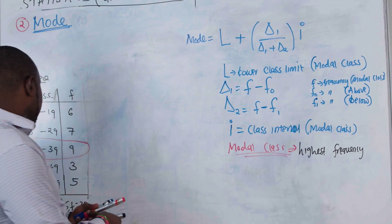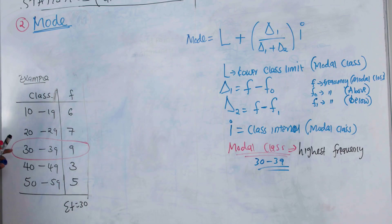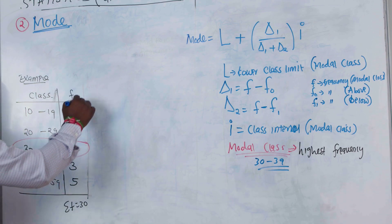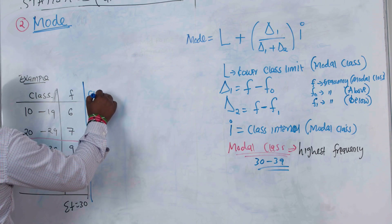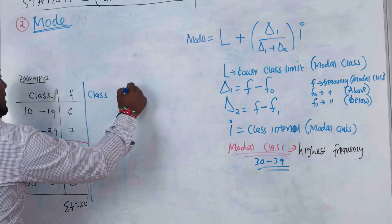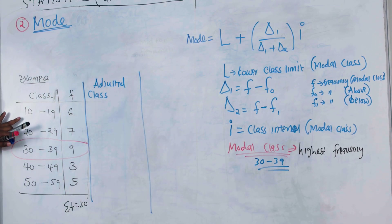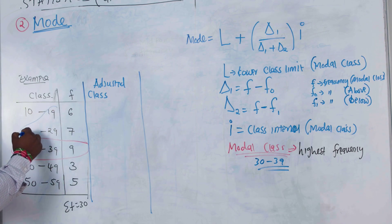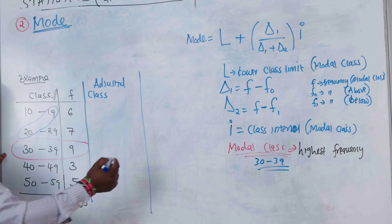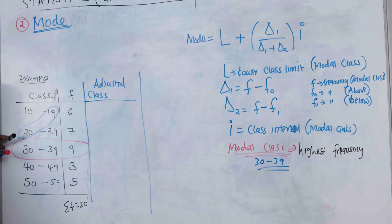Now, for this modal class we need to find the adjusted class limits — the class interval. I always train students on how to get the adjusted class limits. For example, if you have classes 10–19 and 20–29, look at the gap between 19 and 20: the difference is 1.